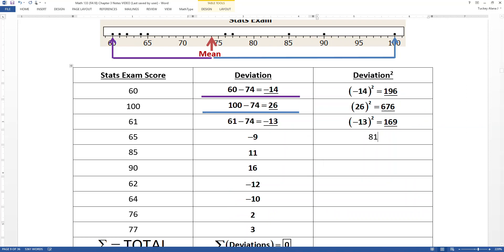So it's 81, 121, 256, 144, 100, 4, and 9. There they are.